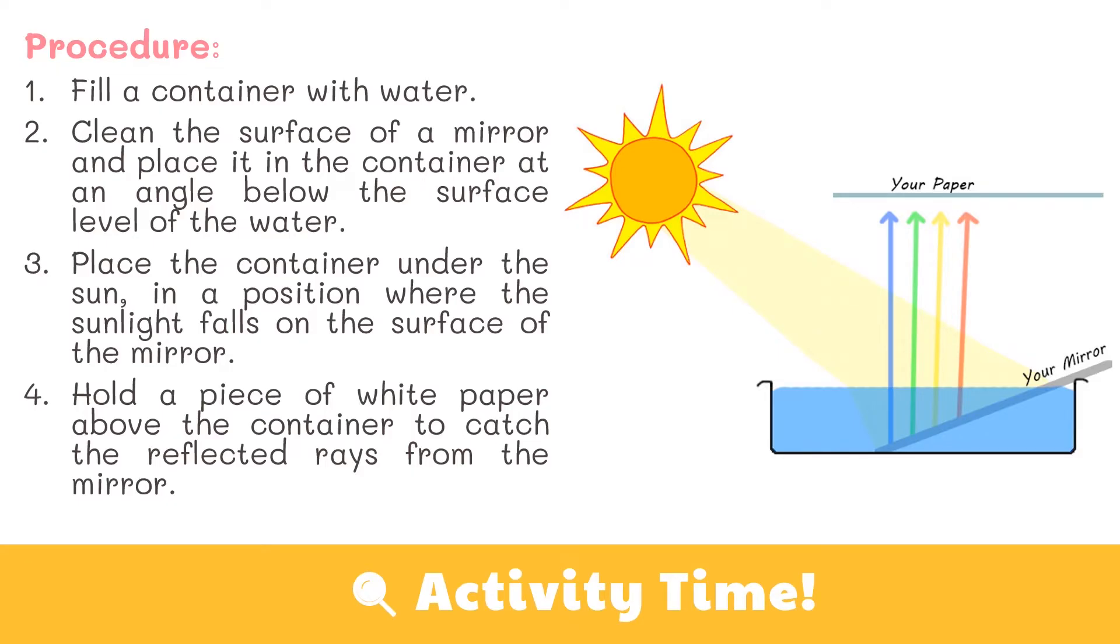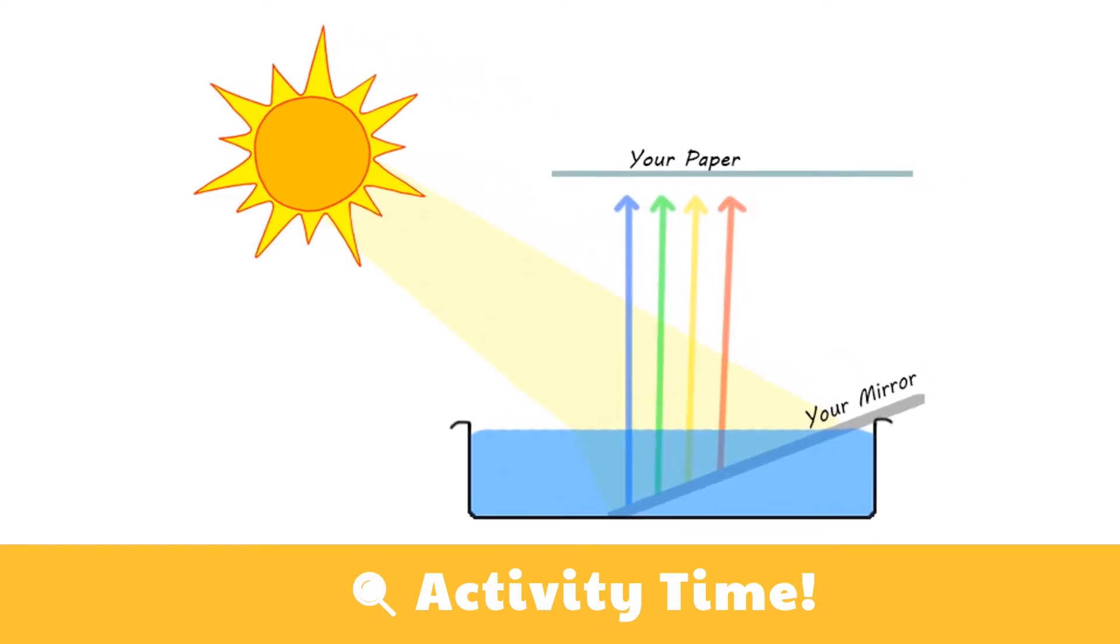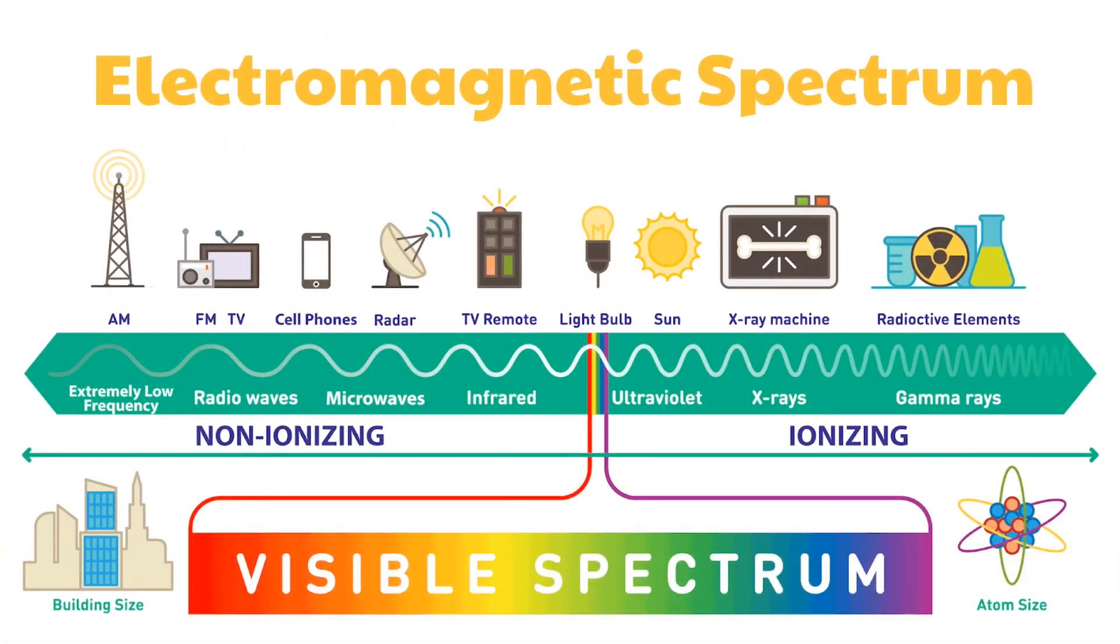What did you see on the paper? If you did the activity right, you would see a rainbow reflected on the paper. When the sunlight shone on the mirror, light first entered the water and refracts or bends. Since sunlight is a mixture of visible colors, each color has its own frequency and wavelength. These colors refract at different angles and get separated from each other. The separated colors are then reflected from the mirror to the paper.